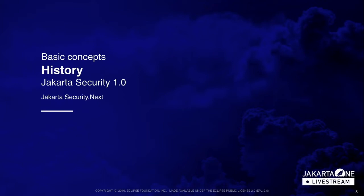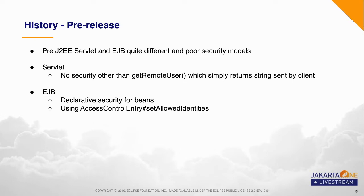After the basic concepts, we move on to the history of security in the Jakarta EE platform. Let's start with the very early history, around 1998, when we didn't even have J2EE yet. In this time, Servlet and EJB had quite different and actually rather poor security models. Servlet had practically no security or authentication provisions at all, other than a getRemoteUser method, which simply returns a string sent by the client, which can of course not be trusted. EJB did start out with declarative security for beans - it was accomplished via a setAllowedIdentities method on the access control entity type, which was then serialized and shipped along with an application. XML deployments didn't exist yet. These were truly the olden days.